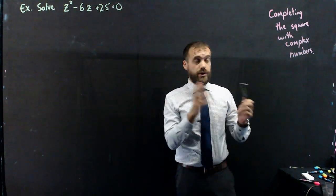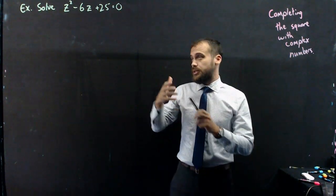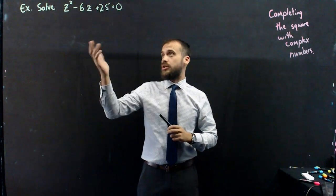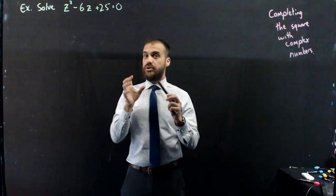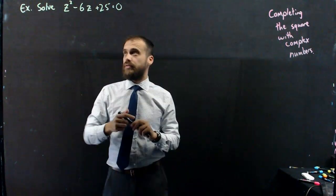All right, so I'm going to be doing completing the square with complex numbers. Let's just solve the question straight away. Solve z squared minus 6z plus 25 equals 0.